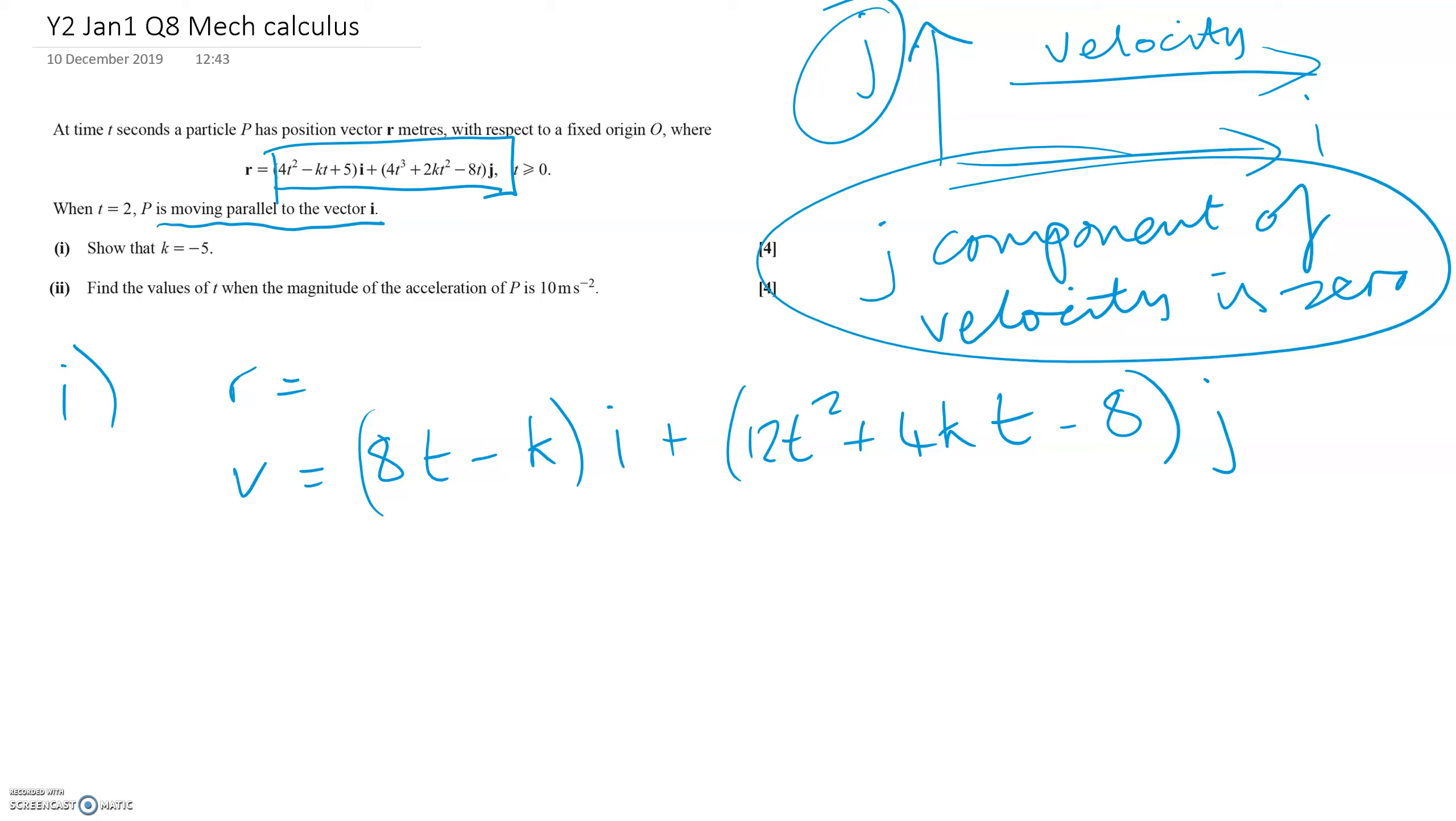As I was saying, if it's moving parallel to the vector I, that means this J component equals zero. So 12T² plus 4KT minus 8 equals zero.